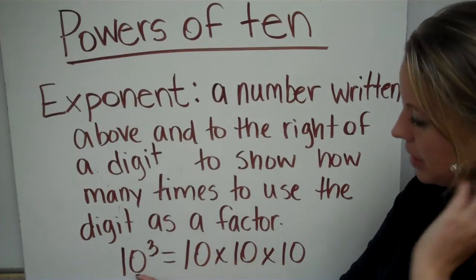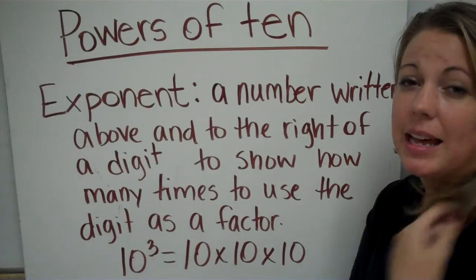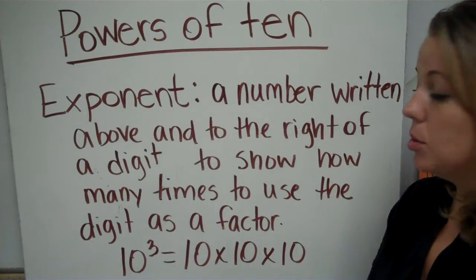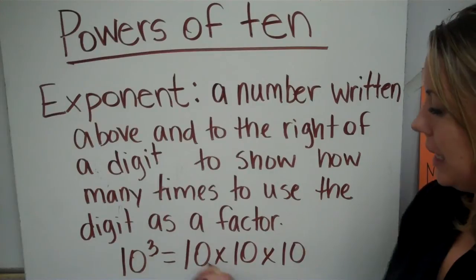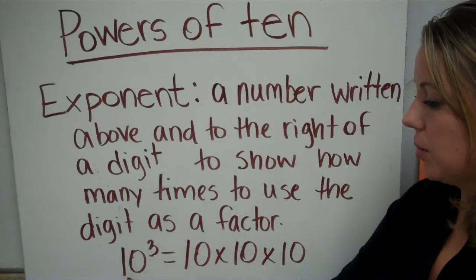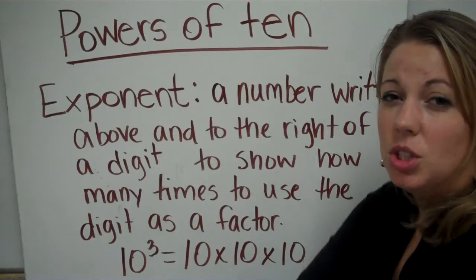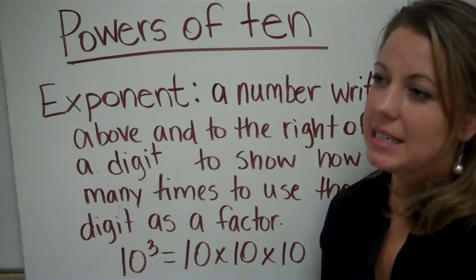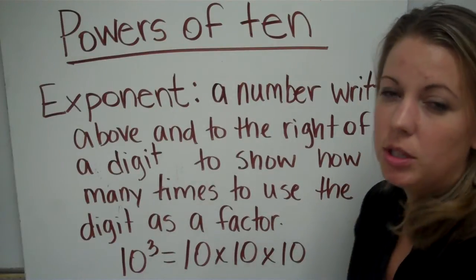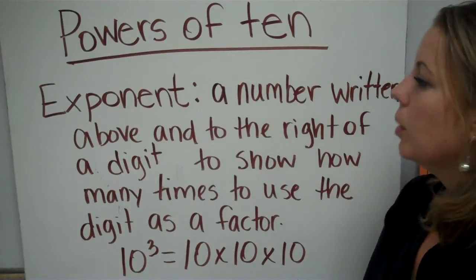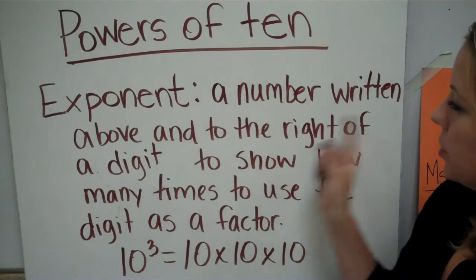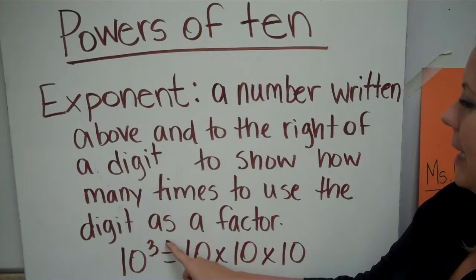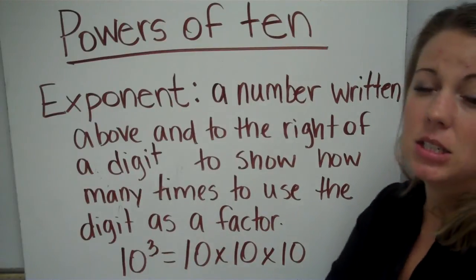If you look at ten to the third power, the three is the exponent and ten is the factor. This is telling you to multiply ten by itself three times. The three is telling you to do it three times and the ten is telling you what number to use. Ten to the third can more easily be communicated than ten times ten times ten. A number written above and to the right shows how many times to multiply that digit by itself.